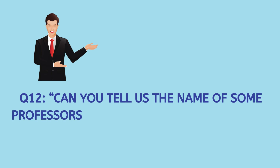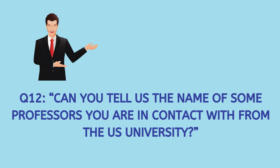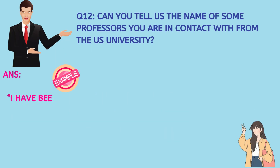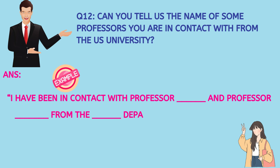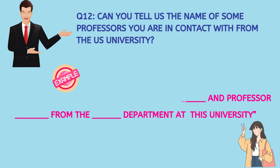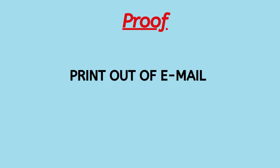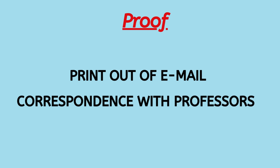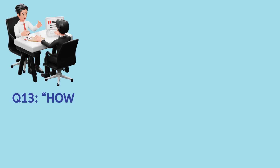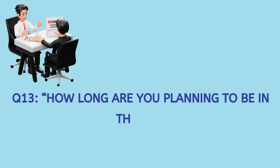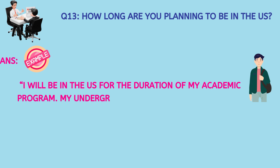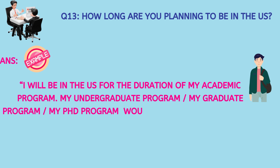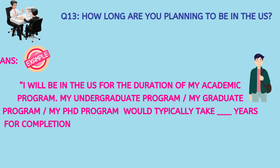They could also ask: can you tell us the name of some professors you are in contact with from the U.S. university? Here you can mention the name and department of professors with whom you might be in touch. You could say, 'I have been in contact with Professor so-and-so from this department at the university.' And as proof, if you have some emails that you've exchanged with them, please carry a copy of that as well. The next question could be: how long are you planning to be in the United States? The general answer would be, 'I will be in the United States for the duration of my academic program' — whether that is two years or four years — 'and after that, I intend to go back to my home country and use this knowledge to further grow my career.'